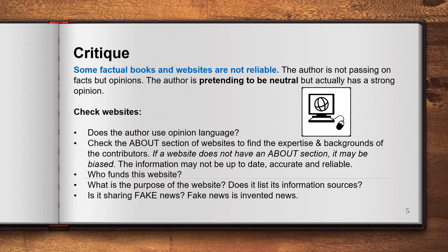Some factual books and websites are not reliable. The author may be pretending to be neutral and just talking about facts, but actually has a strong opinion. We can check websites to see if the author uses opinion language. We should check the 'About' section of websites to find the expertise and backgrounds of contributors. If a website does not have an 'About' section, it's quite possible it's not an expert website. Consider who funds the website, what its purpose is, whether it lists its information sources, and whether the information might be fake news — invented content.